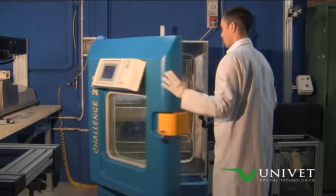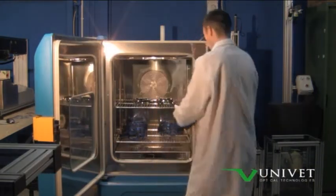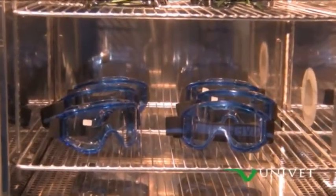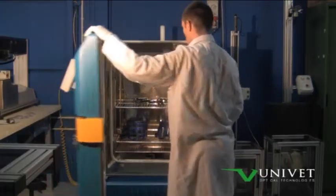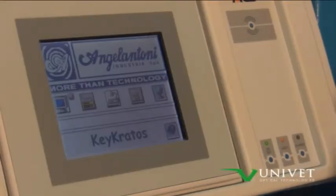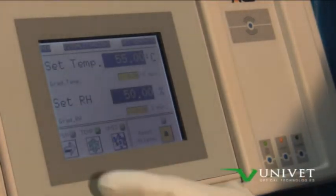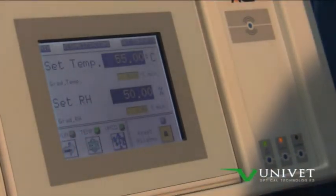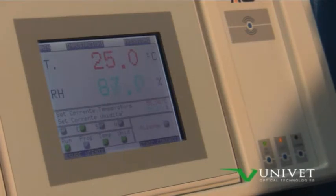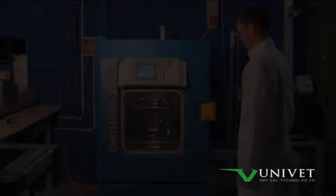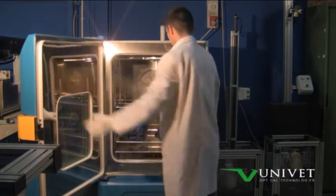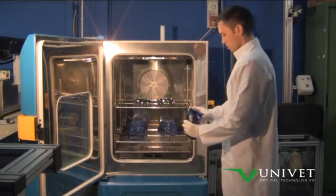The climatic chamber is used to condition the samples before performing impact tests at a given temperature and relative humidity. The EN166 requires that the impact resistance test at extreme temperatures is done on samples conditioned at minus 5 degrees and plus 55 degrees Celsius for one hour. The capabilities of this machine also allows the verification of performance of PPE to extreme temperatures, such as those that may occur in very cold or very hot environments.